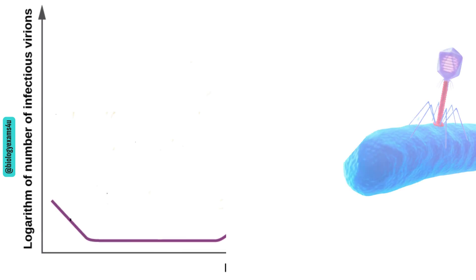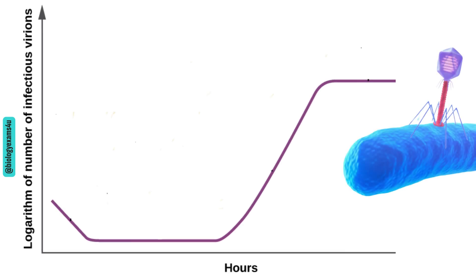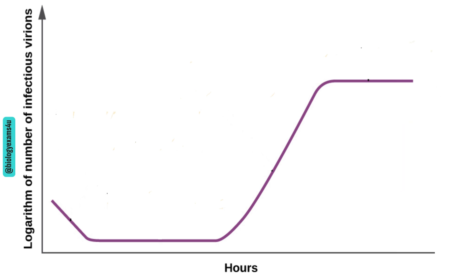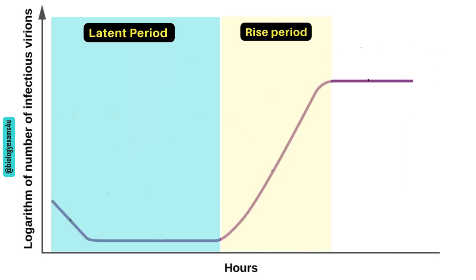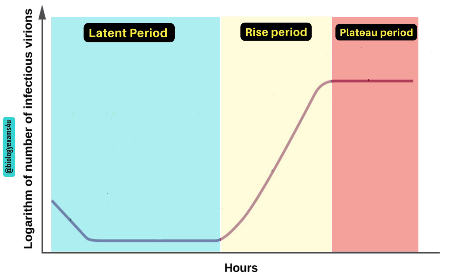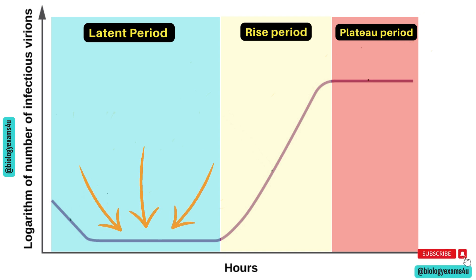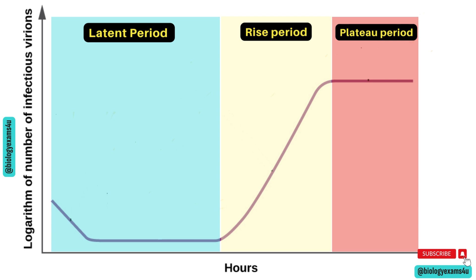The one-step growth curve of bacteriophages consists of three main phases: latent period, rise period, and plateau period. The latent period is the initial phase where no new phages are detected outside the host cell, as you can see here. It can be further subdivided into eclipse phase and intracellular accumulation.